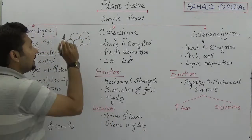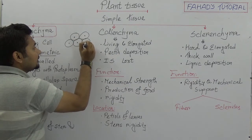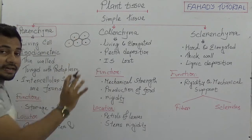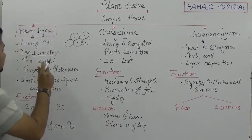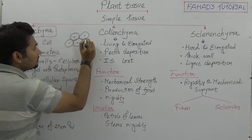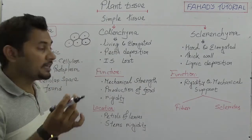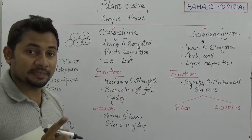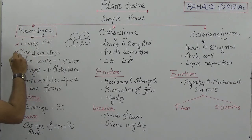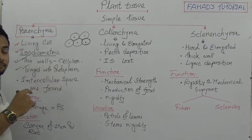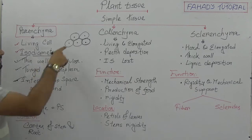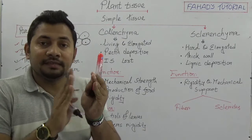All parenchyma cells look similar, and when they join each other, there is some intercellular space. Parenchyma cells have thin walls due to the presence of cellulose. Because the walls are thin, intercellular space is present. Key characteristics of parenchyma: living cells, isodiametric, thin walls, turgid with protoplasm, and intercellular space.